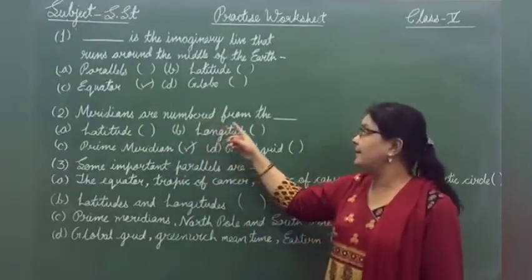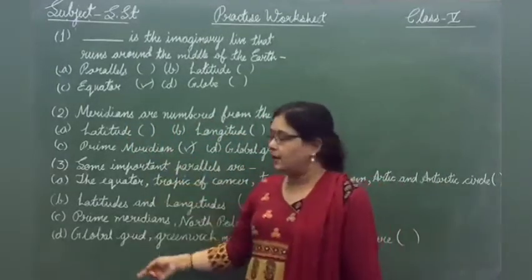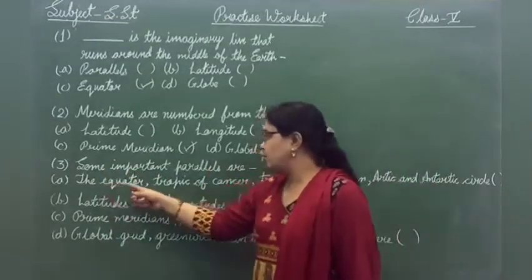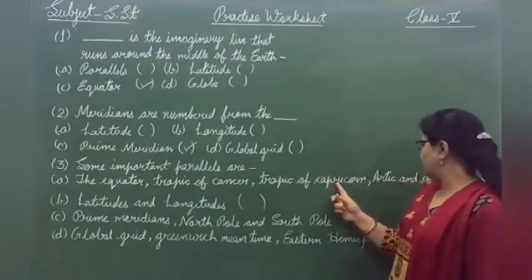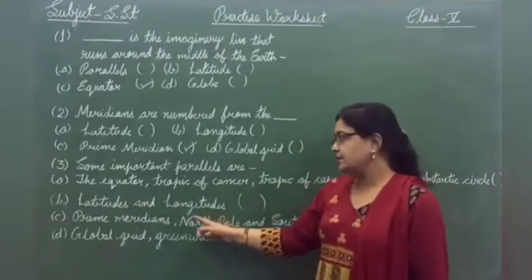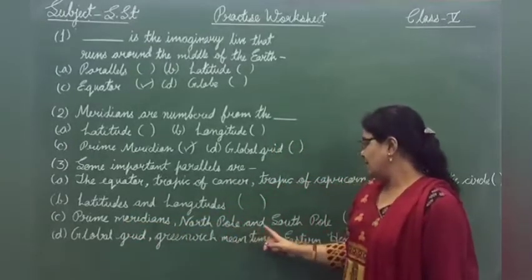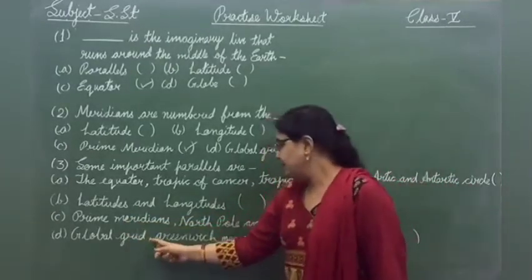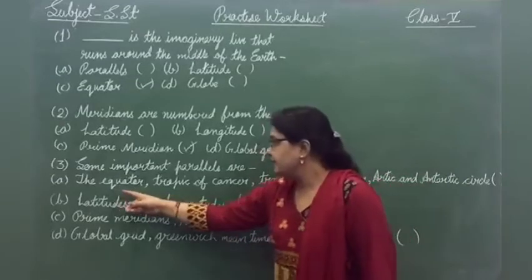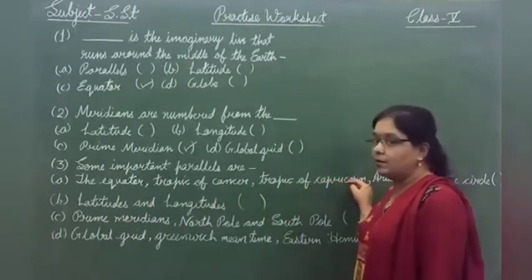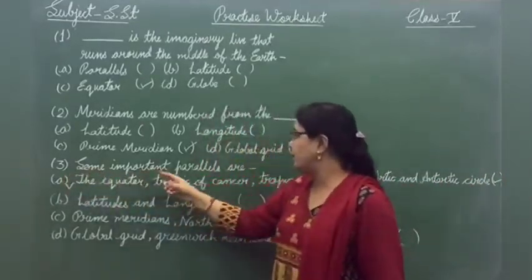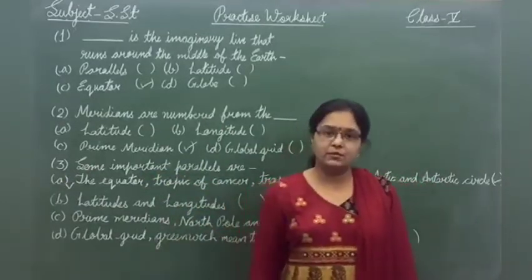Meridians are numbered from the prime meridian. Question number 3: some important parallels are — the options are the equator, Tropic of Cancer, Tropic of Capricorn, and Arctic and Antarctic Circle. All of the above is the correct option. Some important parallels are all of these. I hope you all understood. Thank you.